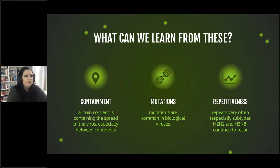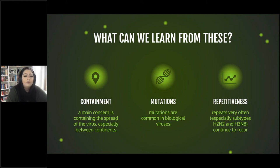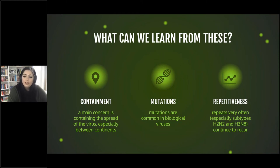Looking at all of these, we can ascertain a couple of things. A main concern is containing the spread of a virus, especially between continents — a scale we have not yet mastered. We've also learned that many recurring infections are mutations, which are very common among viruses. Viruses are often made of RNA rather than DNA, making them less stable and more prone to errors. Because they don't have a proofreading step at the end of replication, mistakes often lead to mutations. Finally, we see a lot of repetitiveness — certain strains are hardier and can easily become recurrent.